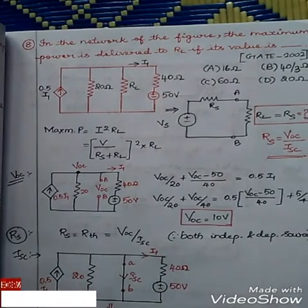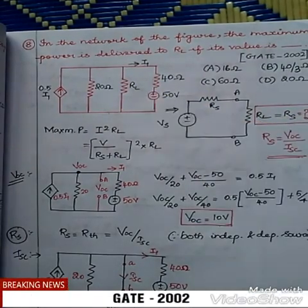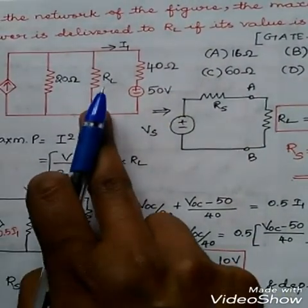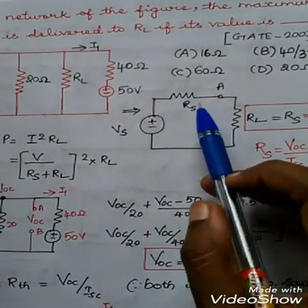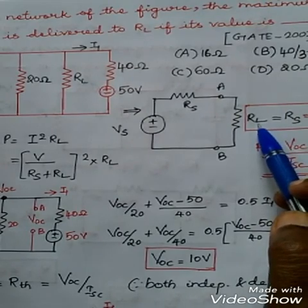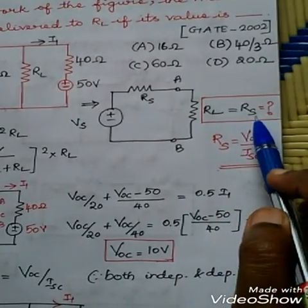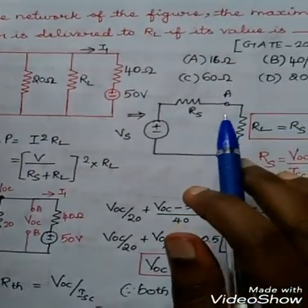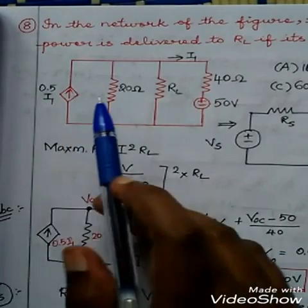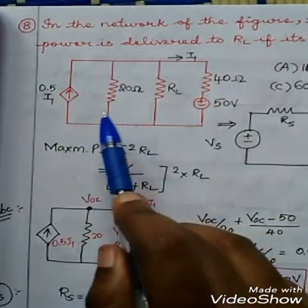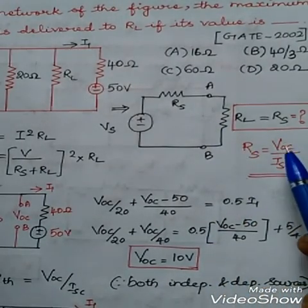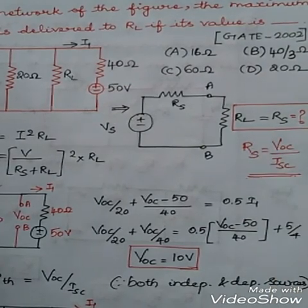Problem number 8. This problem is to find the value of RL such that it absorbs maximum power. This problem appeared in GATE 2002, with options given. Find the Thevenin's equivalent circuit and the value of RL that absorbs maximum power. The value of RL will be equal to RS. So the problem is to find the value of RS alone — no need to find the maximum power. Just find the value of RL equal to RS, which equals Rth. Since the problem has both independent and dependent sources, Rth equals VOC divided by ISC. Find VOC and ISC and substitute.